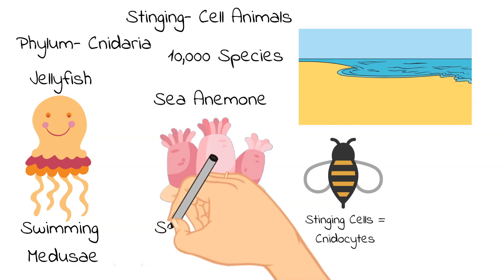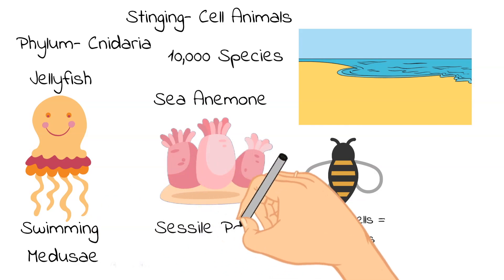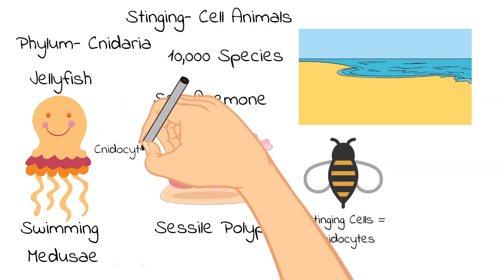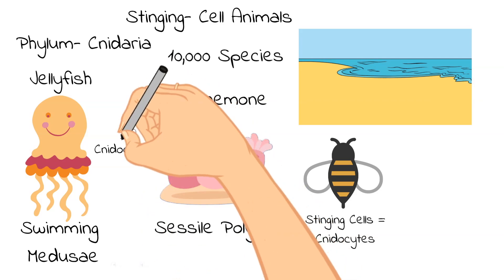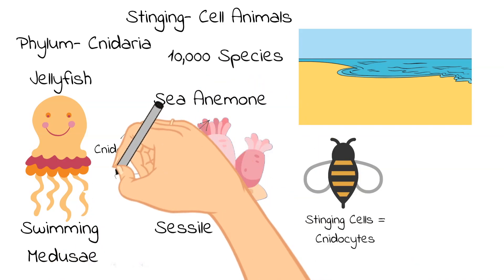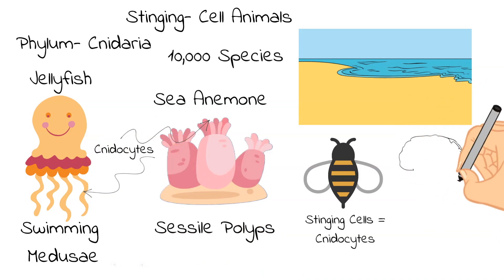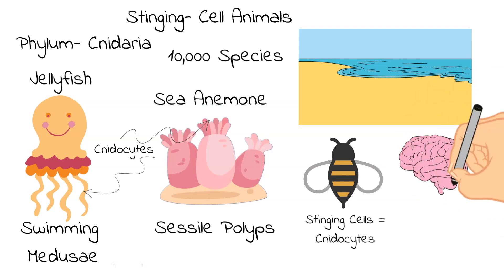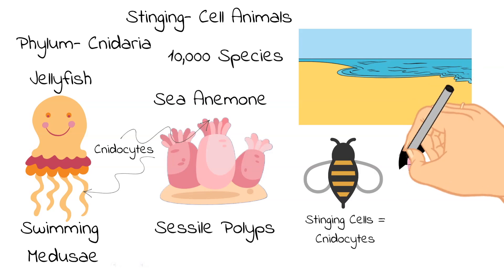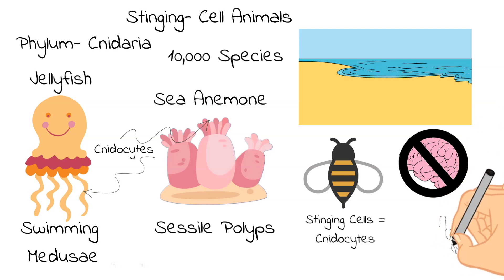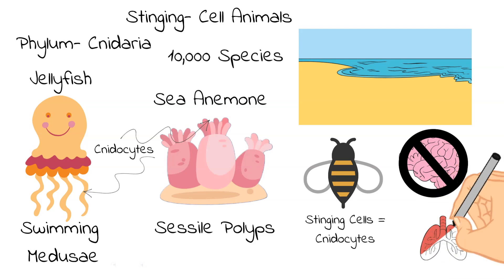Both types of cnidarians have mouths, and they are typically surrounded by cnidocytes found on tentacles. Cnidarians eat anything from plankton to even animals that are bigger than themselves. They have no formal brain or even a central nervous system, but they do have areas of tissue that are neural in nature — some form of centralization of a nervous system, but not a formal central nervous system. They do not have any organs that help them breathe, and they actually just absorb oxygen from the surrounding water.